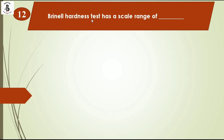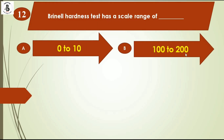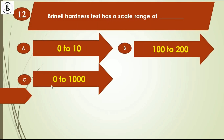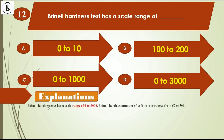Brinell hardness test has a scale range of: option A 0 to 10, option B 100 to 200, option C 0 to 1000, option D 0 to 3000. The Brinell hardness test has a scale range of 0 to 3000. The Brinell hardness number of cast irons is in the range of 67 to 500. So the right answer is option D, 0 to 3000.